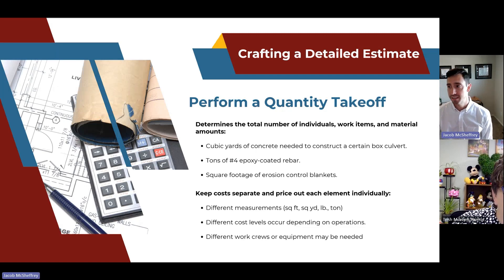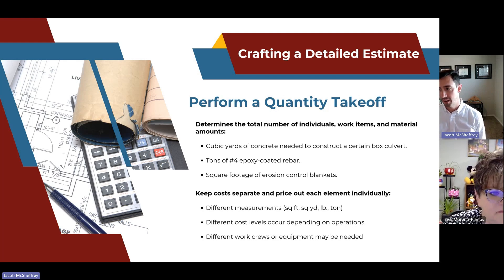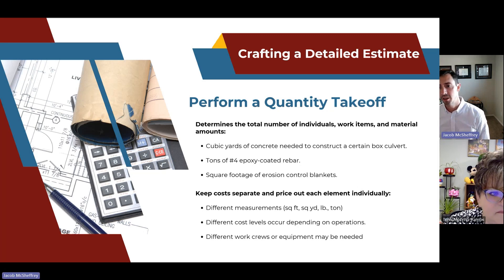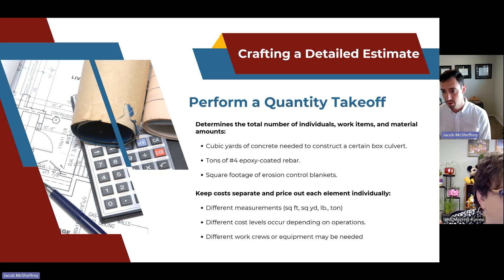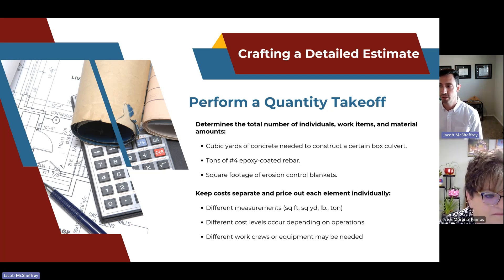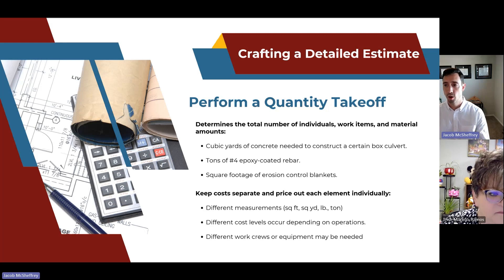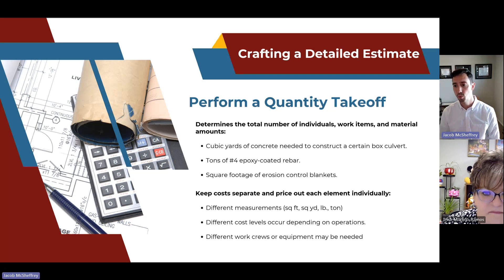Next, perform a quantity takeoff. Estimators determine the total number of individual work items to be completed, the total amount of construction materials needed, and what they'll all cost. Examples include cubic yards of concrete for a box culvert, tons of number four epoxy coated rebar, or square footage of erosion control blankets. Quantity takeoffs usually take more time than any other task because it's so important to understand what each individual detail entails and what those costs will be. Keep costs separate and price out each element individually.